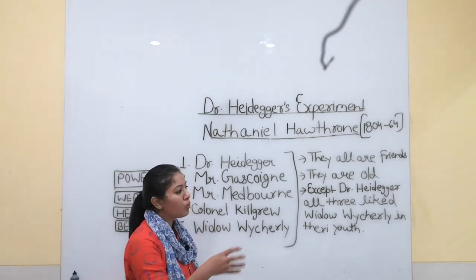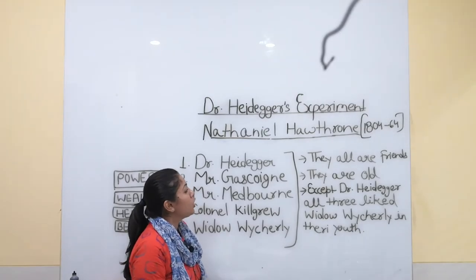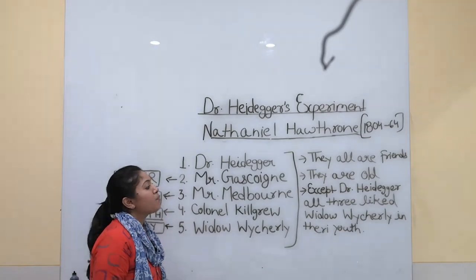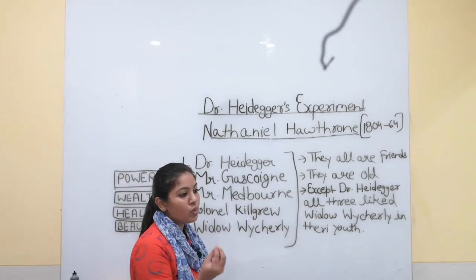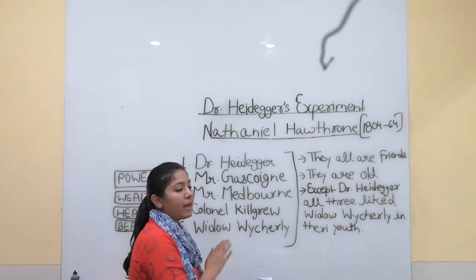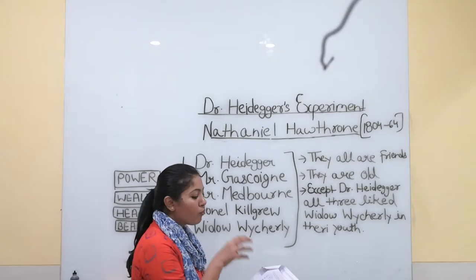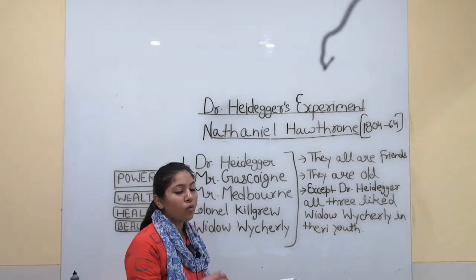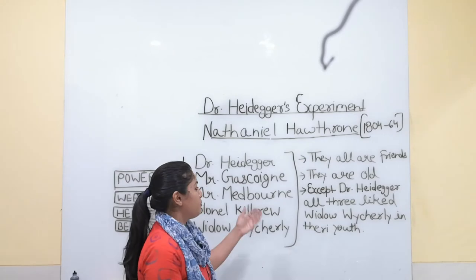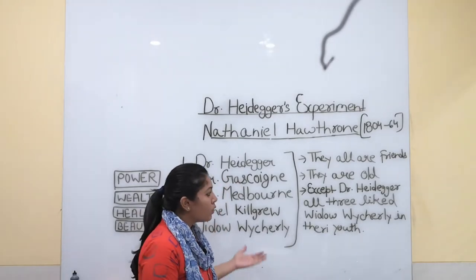In this story there is a book describing an experiment. Dr. Heidegger had a rose preserved from his beloved, and after 55 years it was still fresh in the miracle water. He shows his friends and says he doesn't believe it himself, but this water can restore their youth. His friends become very interested because everyone wants to be young again, so everyone says they want to drink the water.